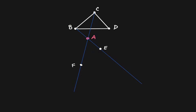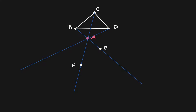Let's repeat the same process but now starting from point D. Let's draw a line from D that passes through A. Let's measure the distance from D to A, which is about 3.3 centimeters. And let's give that same distance but now starting from A — which is about here — and let's create a coordinate point.